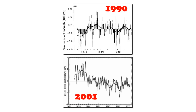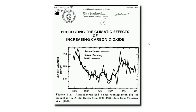In the 1990 report, sea ice greatly increased during the 1970s. But in the 2001 report, it decreased. And if we go back to the 1985 report of the Department of Energy, we can see that sea ice during the 1950s was much lower than it was during the 1970s.